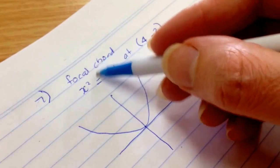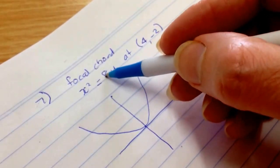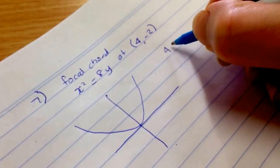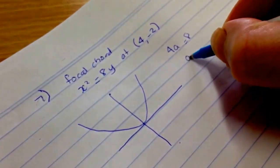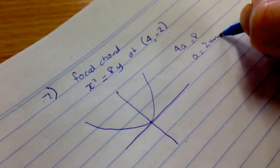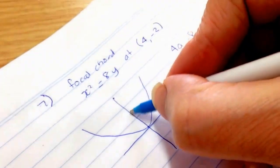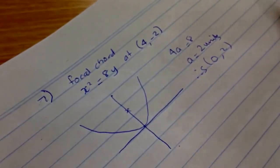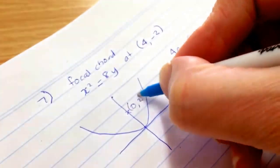And if you want to know what the focus is, you have to let 4a equal 8 because it takes the form x squared equals 4ay. So 4a equals 8, that means the focal length is 2 units. Therefore the focus is (0, 2), so we just write (0, 2) there.